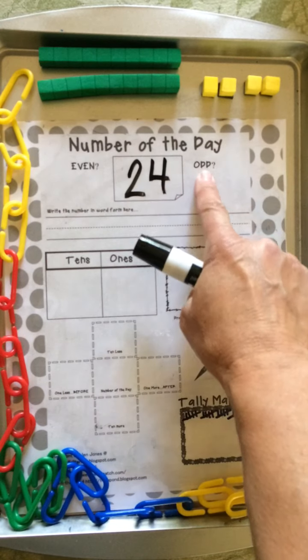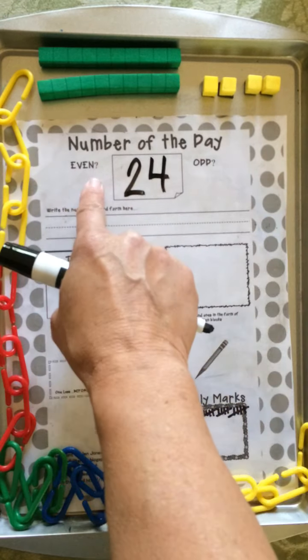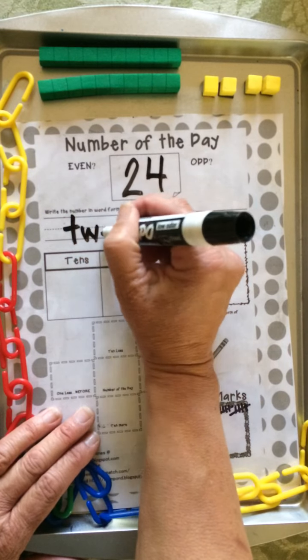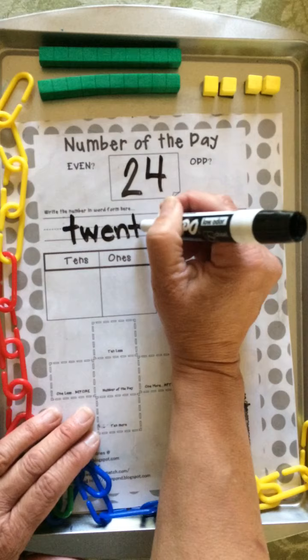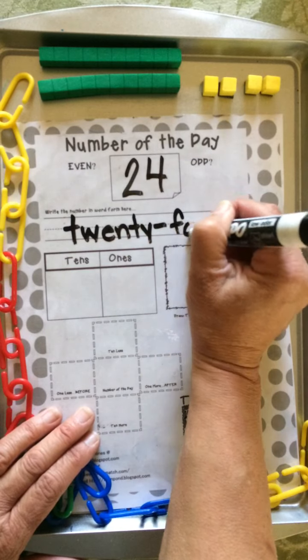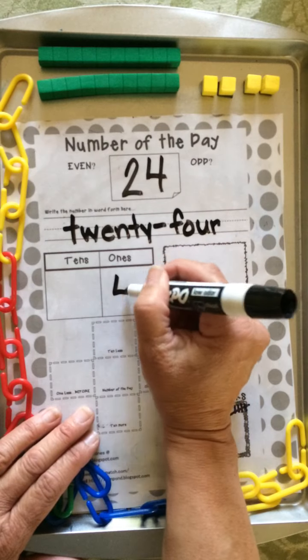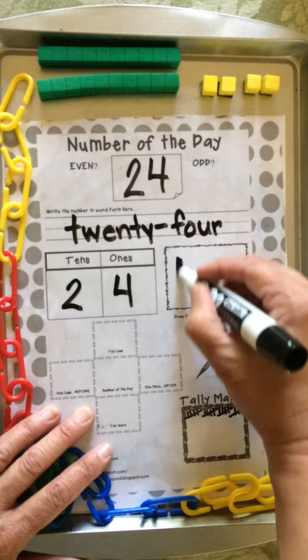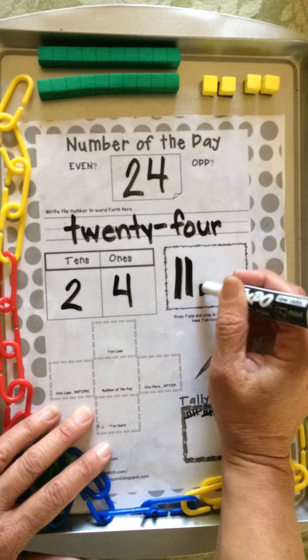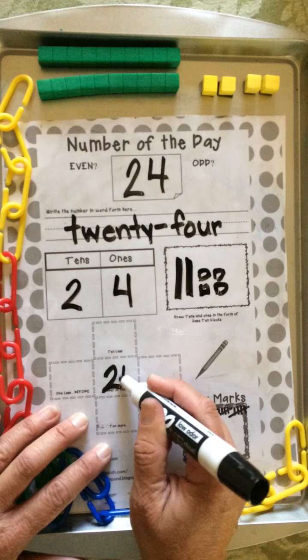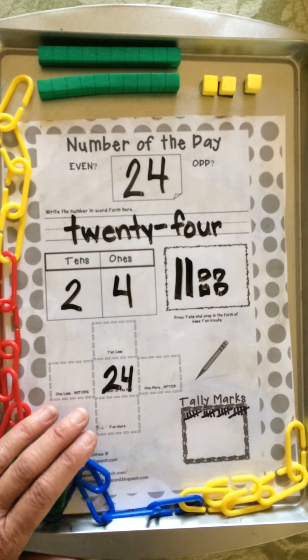Today is 24. Candy cane, give it a shoe, down across, down once more. That's the way to make a 4. Odd is somebody left out. Even, does everyone have a partner? 20 hyphen 4.